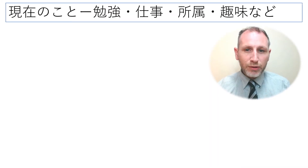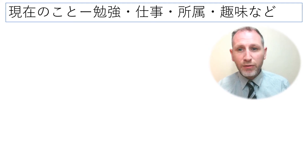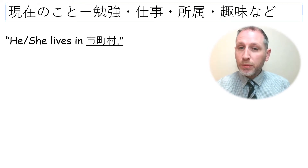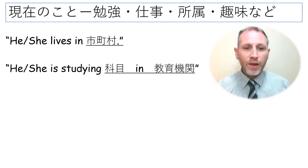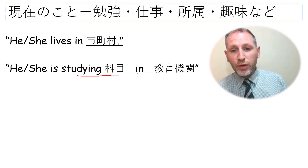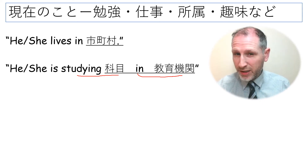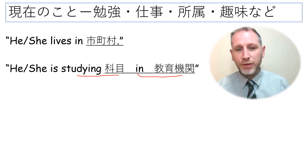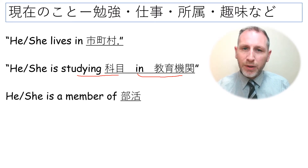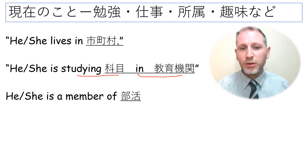For current activities — studying, job, club membership, hobbies — you could say where the person lives, what the person is studying, such as 'He is studying English in Meishu' or 'He is studying baseball in Meishu.' To talk about club membership: 'He is a member of' or 'She is a member of' followed by the club name. For example, 'She is a member of the basketball team.'